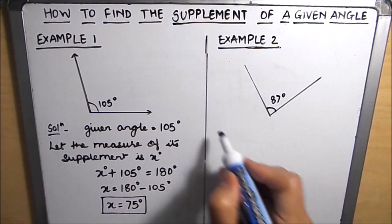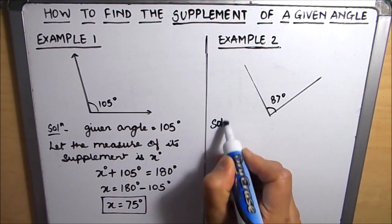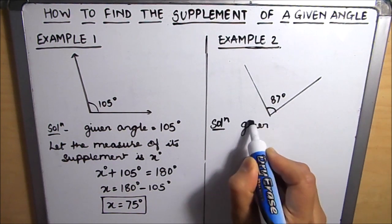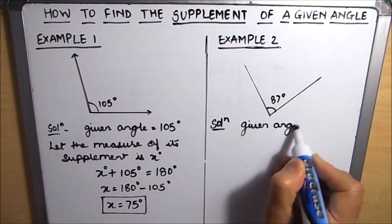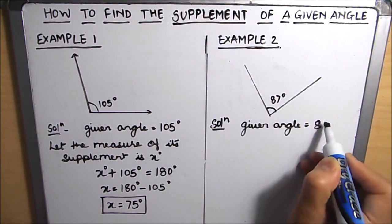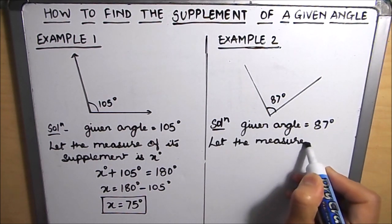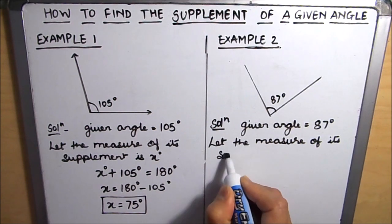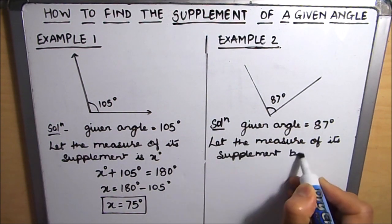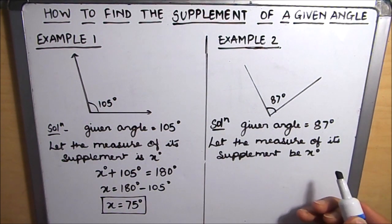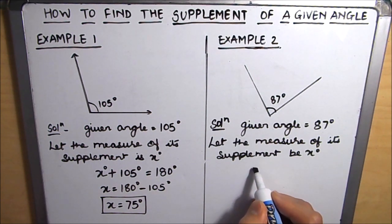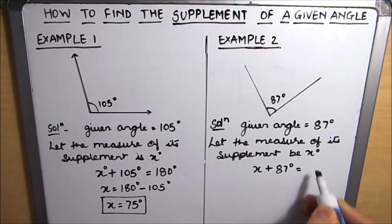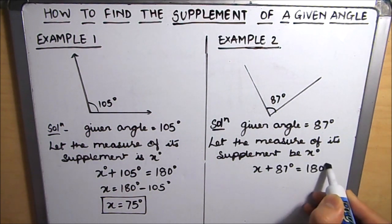Let's move on to our next example. Here the given angle is 87 degrees. Let the measure of its supplement be x degrees. According to the definition of supplementary angles, x plus 87 degrees will be equal to 180 degrees.